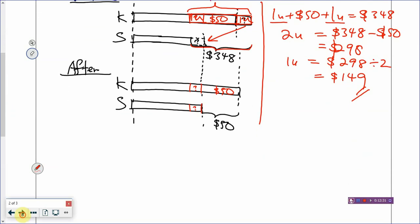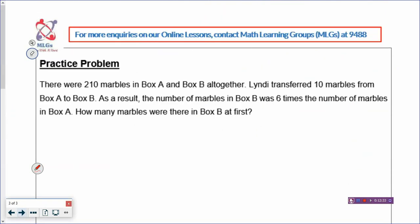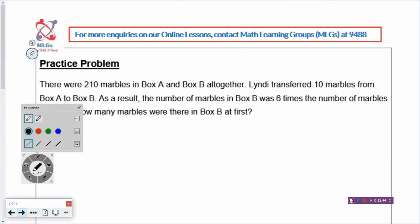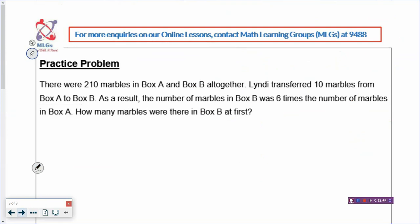All right, let's go to the practice problem. I'm going to give you about 5 to 10 minutes to try to work it out. There were 210 marbles in box A and box B altogether. Lindy transferred 10 marbles from box A to box B — that is the change, the internal transfer. So the total is unchanged — you take out marbles from box A, put it into box B in the same problem.